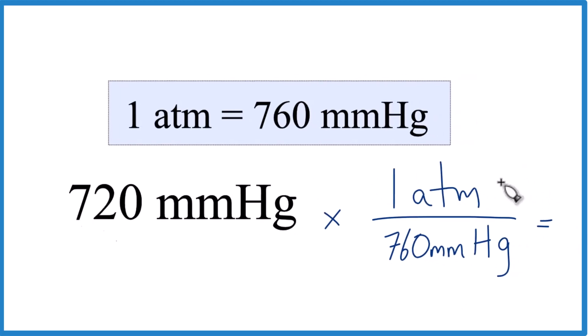So when we multiply and then divide, millimeters of mercury, top and bottom, it's gone. We're left with atmospheres.